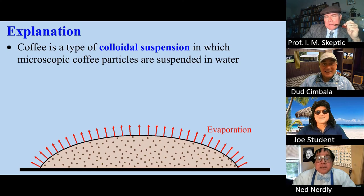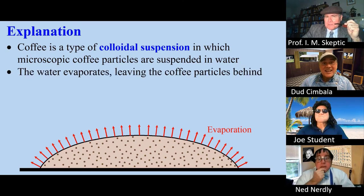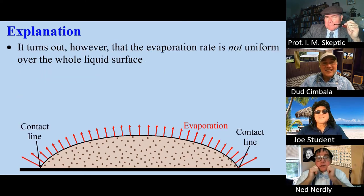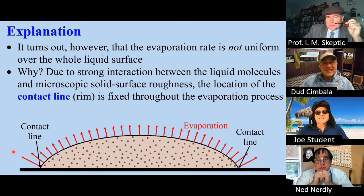Coffee is a type of colloidal suspension. Microscopic particles are suspended in the water. When the water evaporates, coffee particles are left behind. If the evaporation were uniform, no coffee rings would form. But it turns out that the evaporation rate is not uniform due to strong interaction between the liquid and microscopic surface roughness. On the surface, the contact line, or the rim, remains fixed throughout the evaporation process. Near this fixed contact line, liquid molecules can leave more readily, leading to a higher evaporation rate.